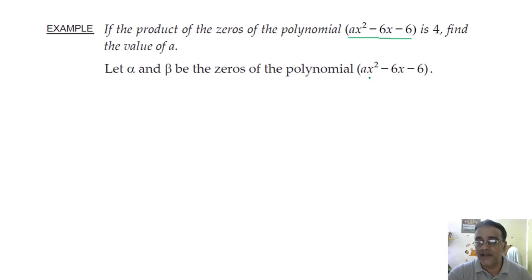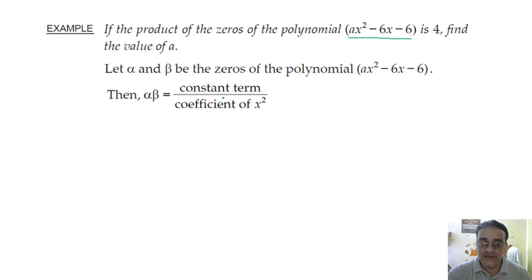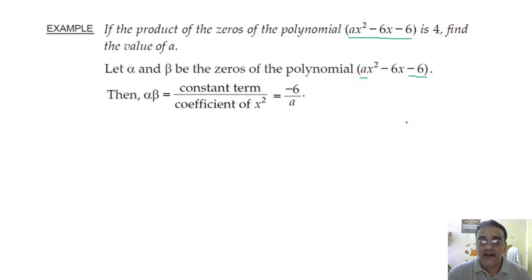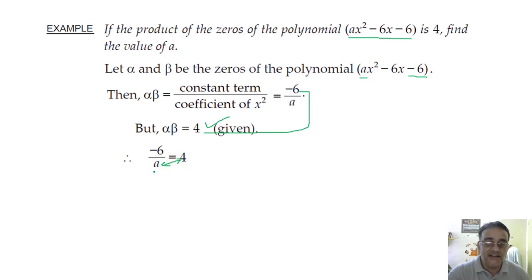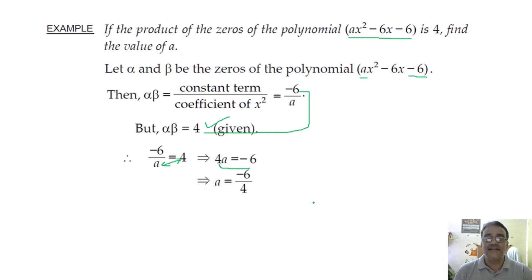Let α and β be the zeros of ax² − 6x − 6. The product of zeros = constant term / coefficient of x², which equals −6/a. The product is given as 4, so equating: −6/a = 4. Cross multiplying and rearranging: a = −6/4 = −3/2. The final answer is a = −3/2.